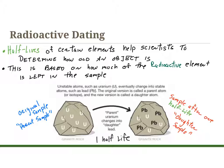Something to know about uranium: when it decays, it goes through multiple steps to get from being incredibly unstable to significantly more stable, and lead is the end of that decay chain. The original sample is often referred to as the parent sample, and the sample after a half-life is referred to as the daughter sample — that's just the terminology used.